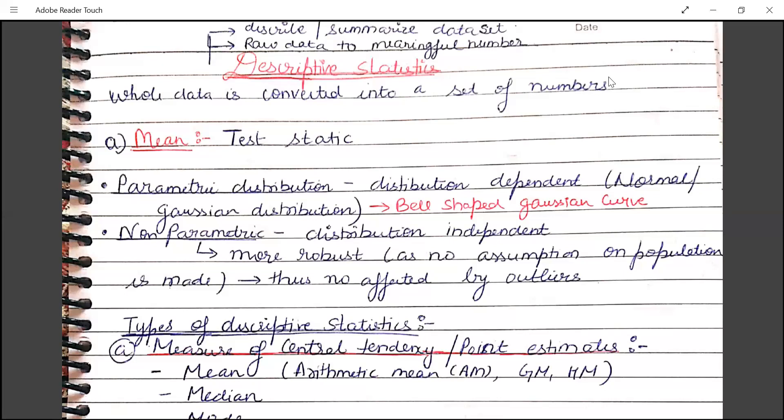In the previous lecture, we learned about parametric and non-parametric distributions. Parametric distribution usually includes the normal Gaussian or bell-shaped distribution — it is distribution dependent. So if there is any outlier present in our sample, it would affect our value drastically. Whereas in case of non-parametric tests, it is not affected by outliers much, so it is a more robust method.